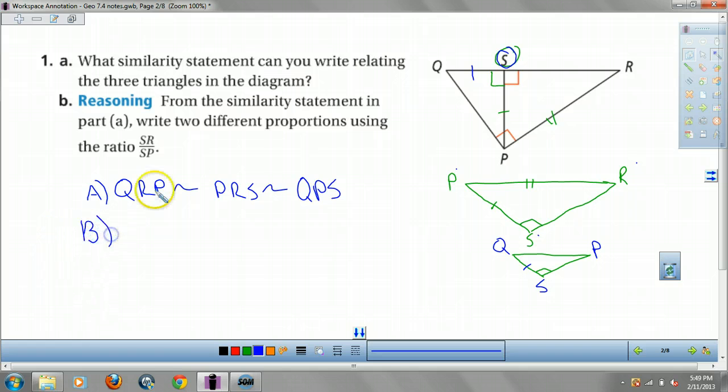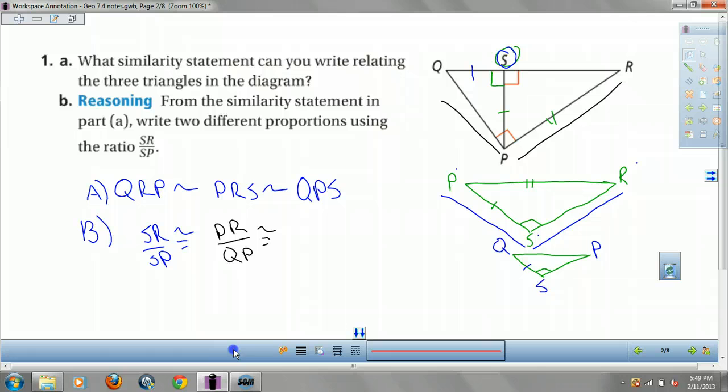And B, if I say SR over SP, well, SR over SP is going to be congruent to PR over QP because they're all similar. And SP over QS. Pretty much it's our longer leg over a shorter leg. Longer leg over shorter leg.